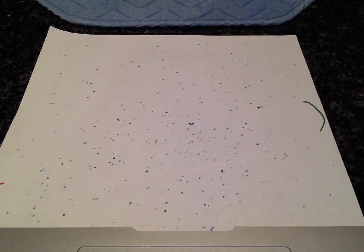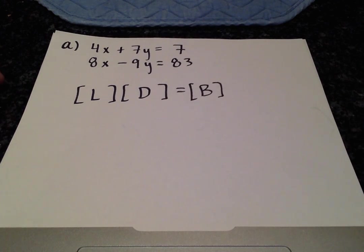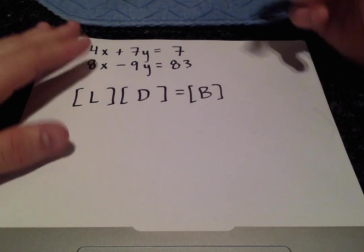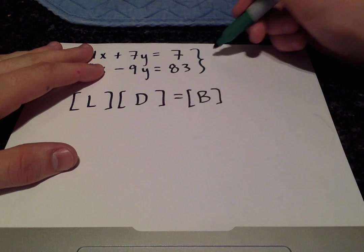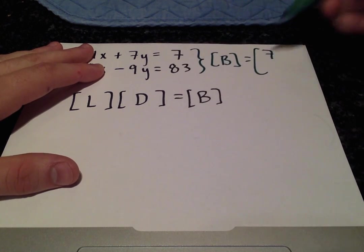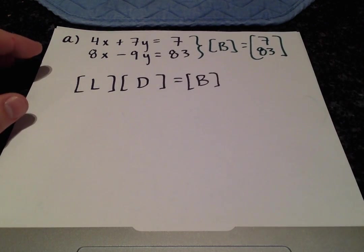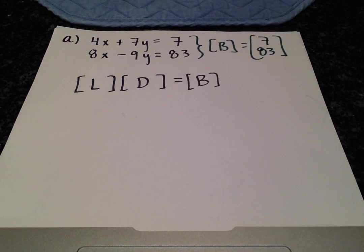We'll get started right away. For part A, I wrote out the system of equations here. The only thing that is changing is the B vector, so we have that as 7, 83. We can begin to fill in the appropriate values for L, D, B.